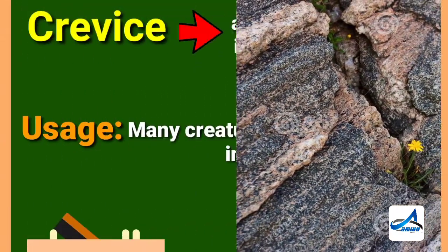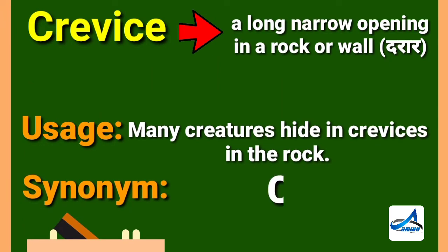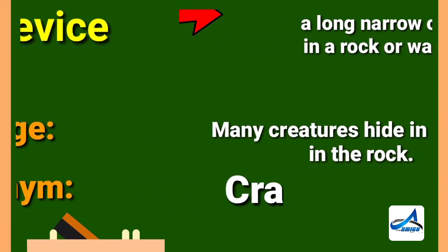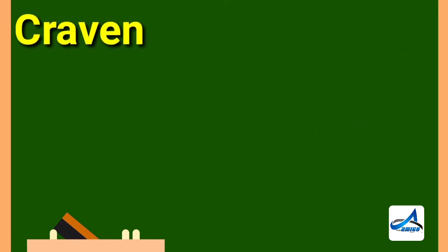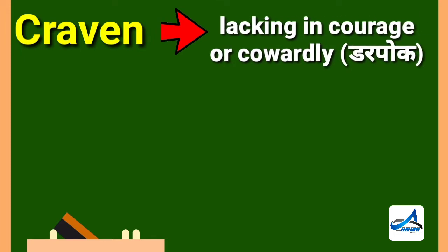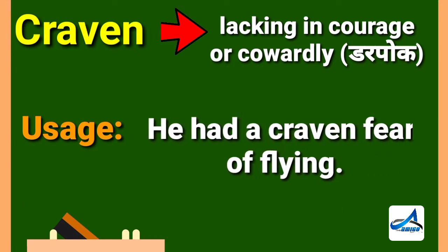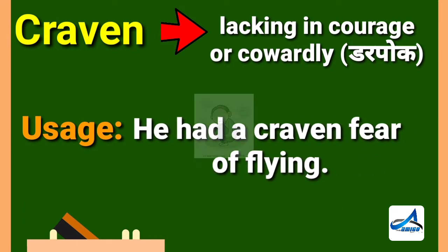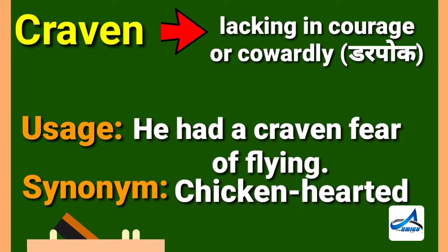Moving to the next word: craven. Craven means lacking in courage, or cowardly. Its Hindi meaning is 'kaayar.' Now look at its sentence: he had a craven fear of flying. Its synonym is chicken-hearted. It's a very important word.